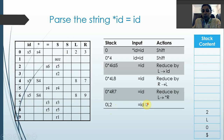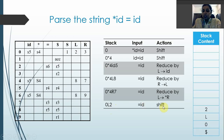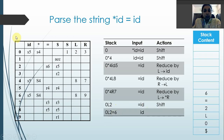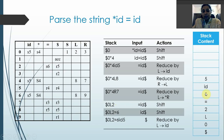Now it is state 2 on '='. This is a shift action — state 2 on '=' shifts to item set 6. So we push '=' and state 6 onto the stack. Then state 6 on id — 6 on id is also a shift, shifting to item set 5. So we push id and state 5 onto the stack.